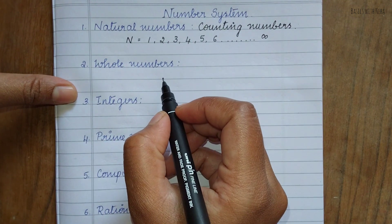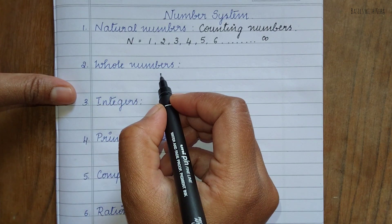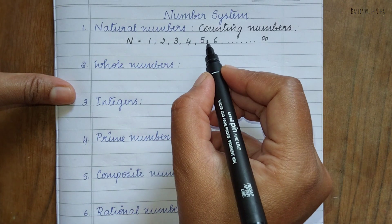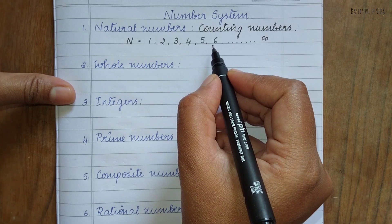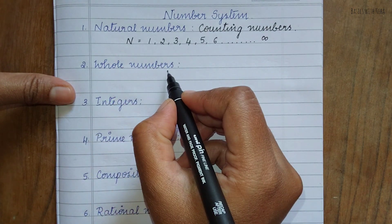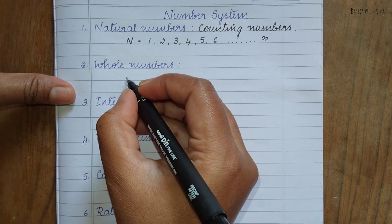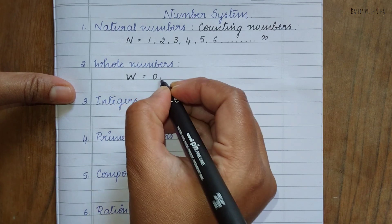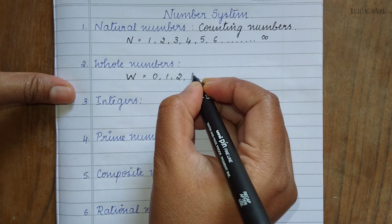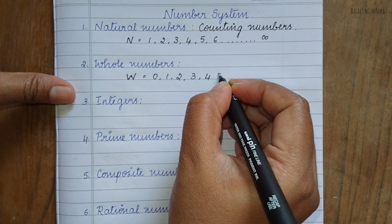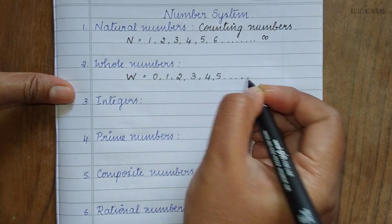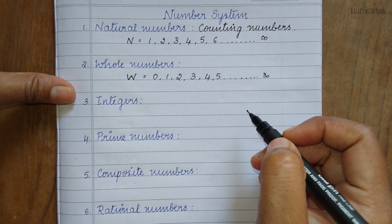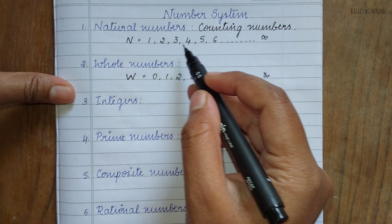Next one is whole numbers, represented by W. Whole numbers include natural numbers plus zero: 0, 1, 2, 3, 4, 5, 6, 7, 8, 9 — up to infinity.